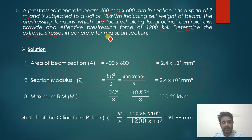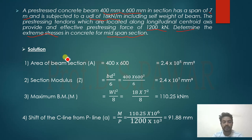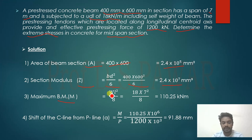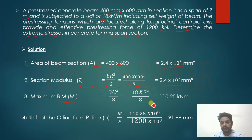First, calculate the required values. Cross-sectional area A = 400 × 600 = 2.4 × 10⁵ mm². Section modulus Z = bD²/6 = 2.4 × 10⁷ mm³. Maximum bending moment M = wL²/8 = 18 × 7² / 8 = 110.25 kN·m.